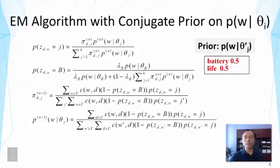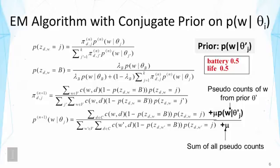Let's look at a specific example. Suppose the user is particularly interested in battery life of a laptop and we're analyzing reviews. The prior says that the distribution should contain one distribution that assigns high probabilities to battery and life. So there's a distribution entirely concentrated on battery life, and our prior says one of your distributions should be very similar to this. If we use MAP estimate with the conjugate prior — the Dirichlet prior based on this preference — the only difference in the EM algorithm is in the M step.